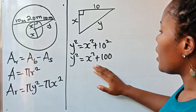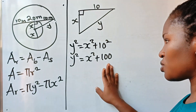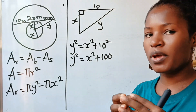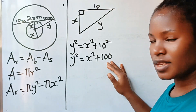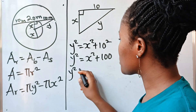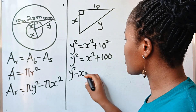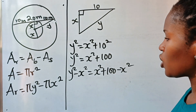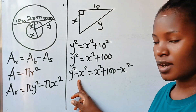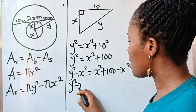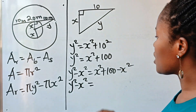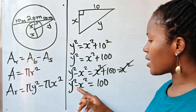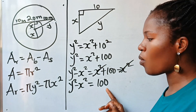Now, let's bring out y squared and x squared. Taking x squared to the other side, we get: y squared minus x squared equals x squared plus 100 minus x squared. Since x squared minus x squared is zero, we have an important equation: y squared minus x squared equals 100.